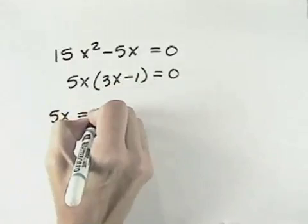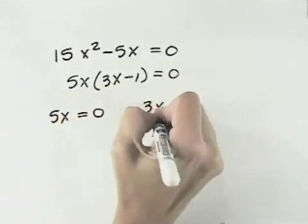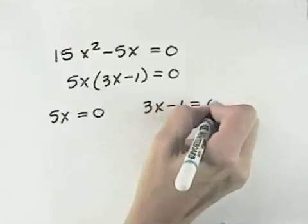That means our first factor is 5x, so we set that equal to 0. And our second factor is 3x minus 1, so we set that equal to 0.